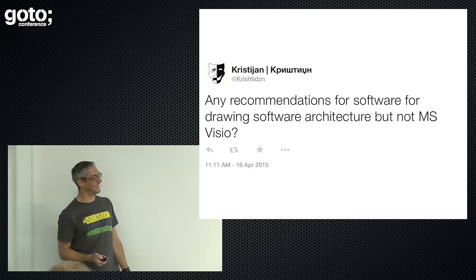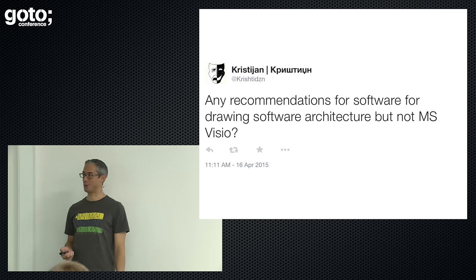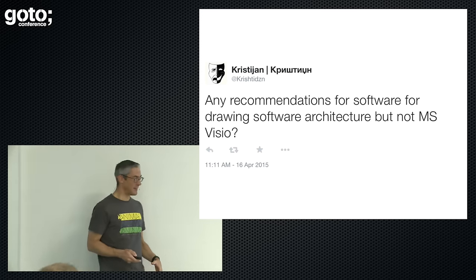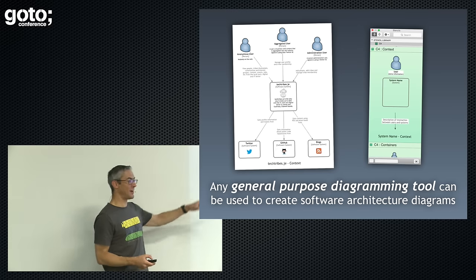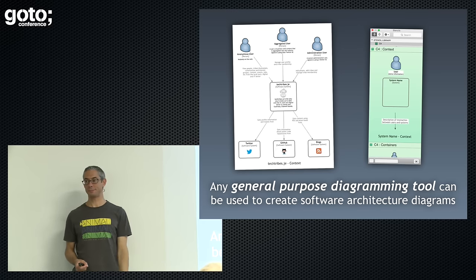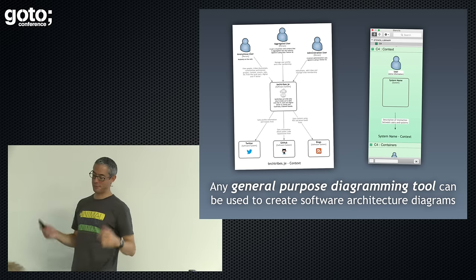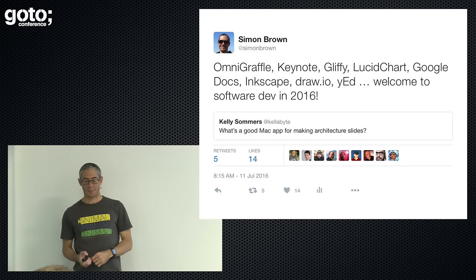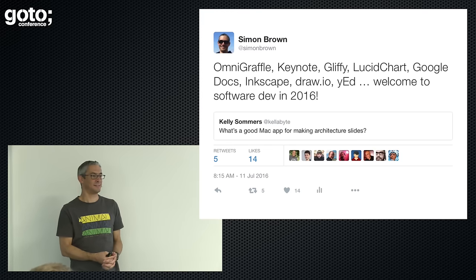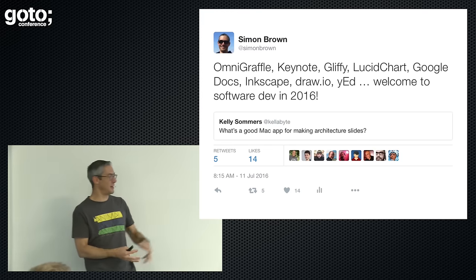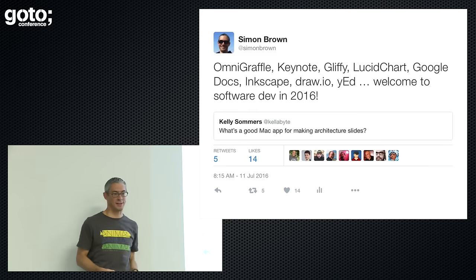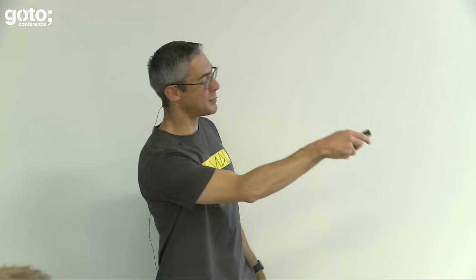I get this question a lot: what tooling do you recommend? Because this is just a set of boxes and lines, any general-purpose diagramming tool will do — Visio, OmniGraffle, Gliffy, whatever you choose. But come on, this is 2016. There was an interesting plea for help on Twitter recently: what tools are there for creating architecture slides? Nobody responded with a modeling tool — it was all general-purpose diagramming tools, which I think is just nuts.